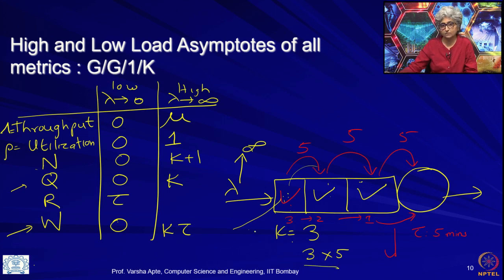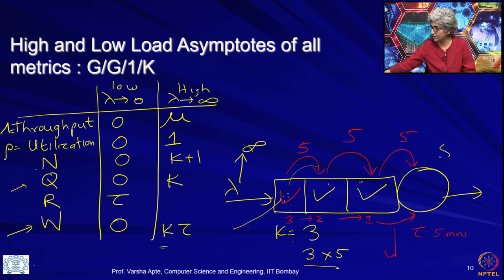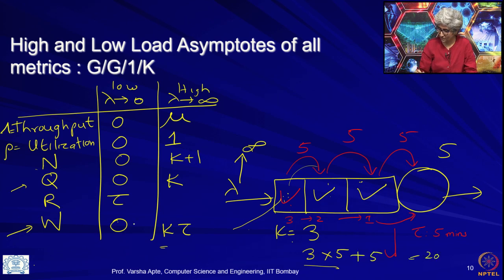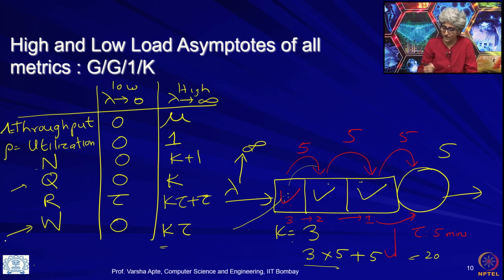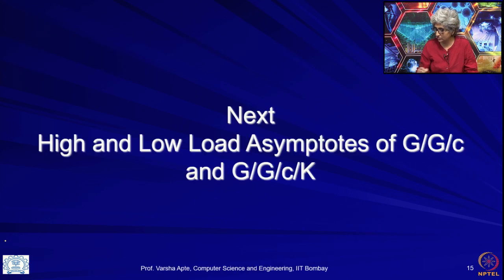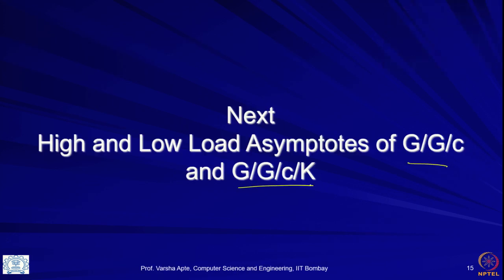Now that we know the high-load asymptote for waiting time is k·tau, the response time asymptote follows trivially: the request also needs its own service time tau, so response time goes to k·tau plus tau. These were the high and low load asymptotes for GG1K, and we will continue with more asymptotes in the next lecture. Thank you.